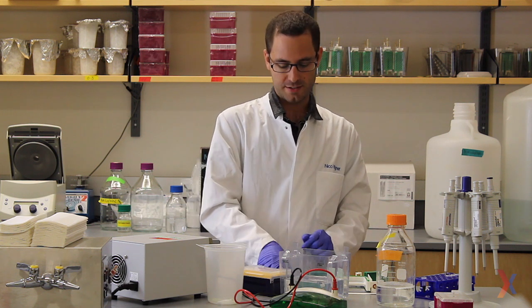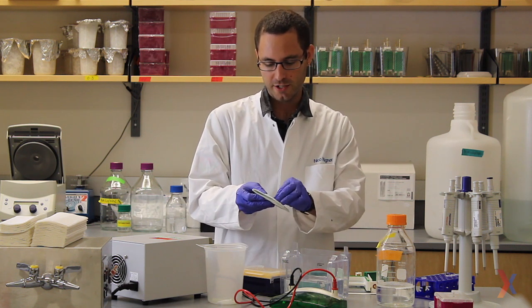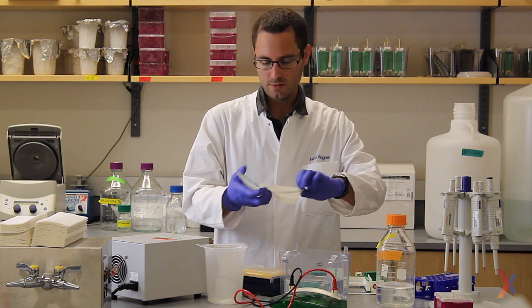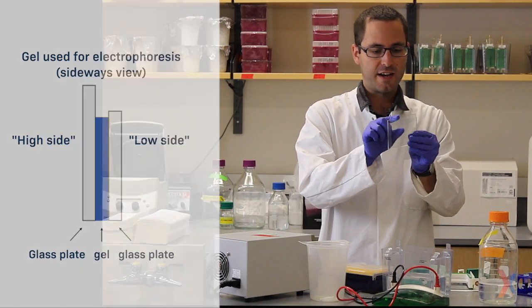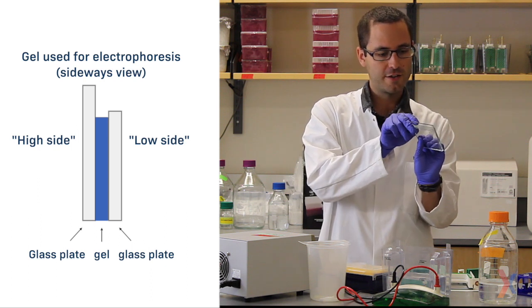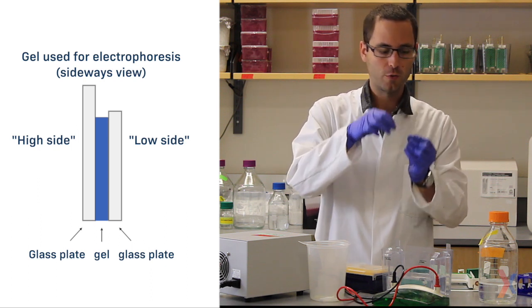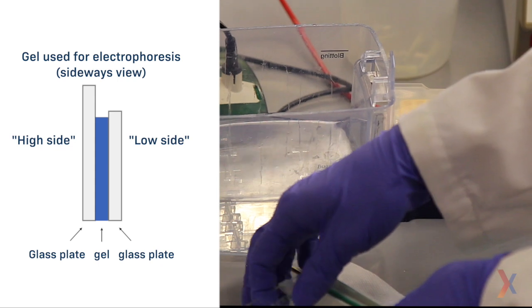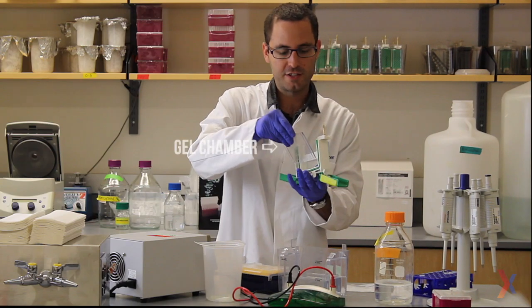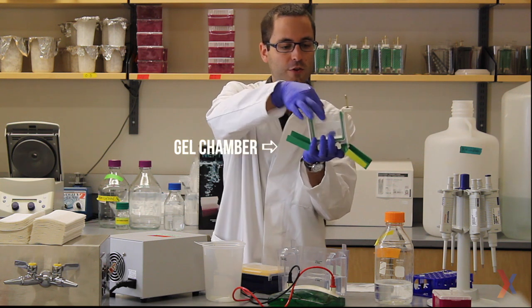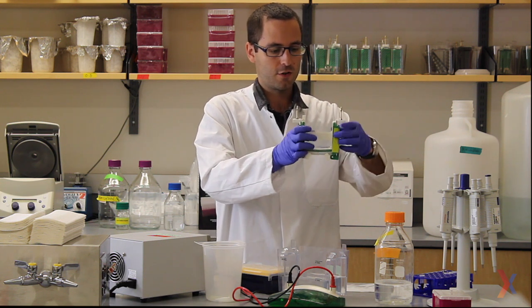Before the samples can be loaded in the gel, the gel needs to be set up. We have a brand new gel right here, which I can take out. There's a high side to this glass and a low side to this glass, and it's important that the lower side goes towards the inside of the gel running chamber. This is the gel running chamber. I have placed the lower side towards the inside. Close it up and place it into here.